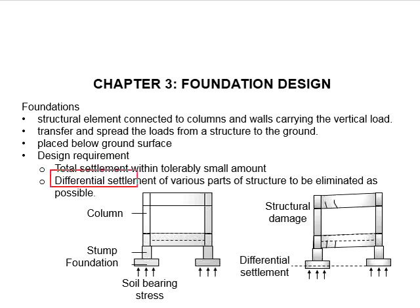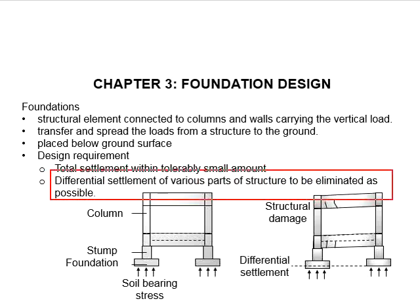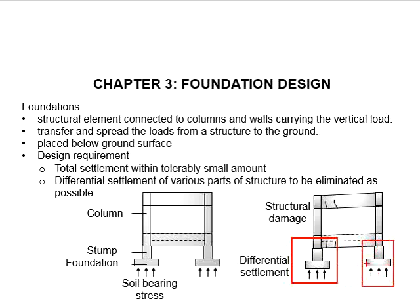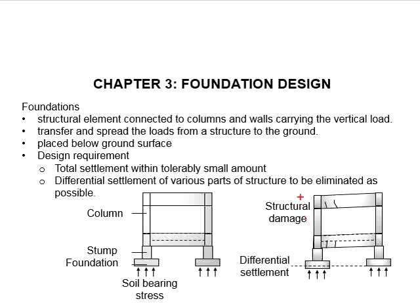Second, the differential settlements of various parts of the structures are to be eliminated as much as possible. Differential settlement is when the settlements of different foundations occur at different rates — some foundations may have larger settlements while others have little or none. This leads to undesired deformations of the structural elements, and such deformations will create stresses at the joints between structural elements, which may result in damage and failure of the structures.